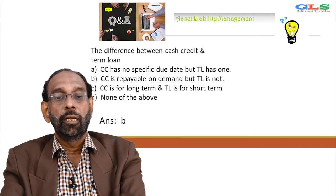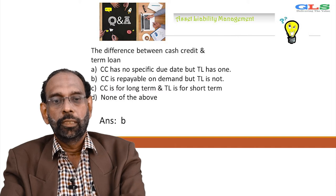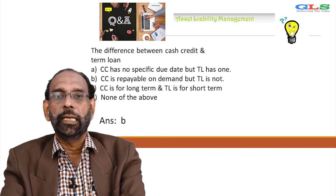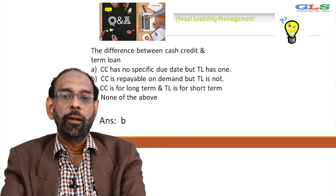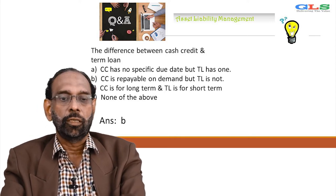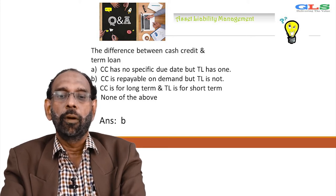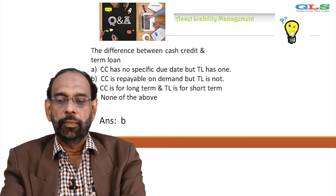Next question: the difference between cash credit and term loan. CC has no specific due date but TL has one. CC is repayable on demand but TL is not. CC is for a long term, TL is for a short term. None of the above. The answer is B — cash credit is repayable on demand but term loan is not repayable on demand. Very important factor to be considered.